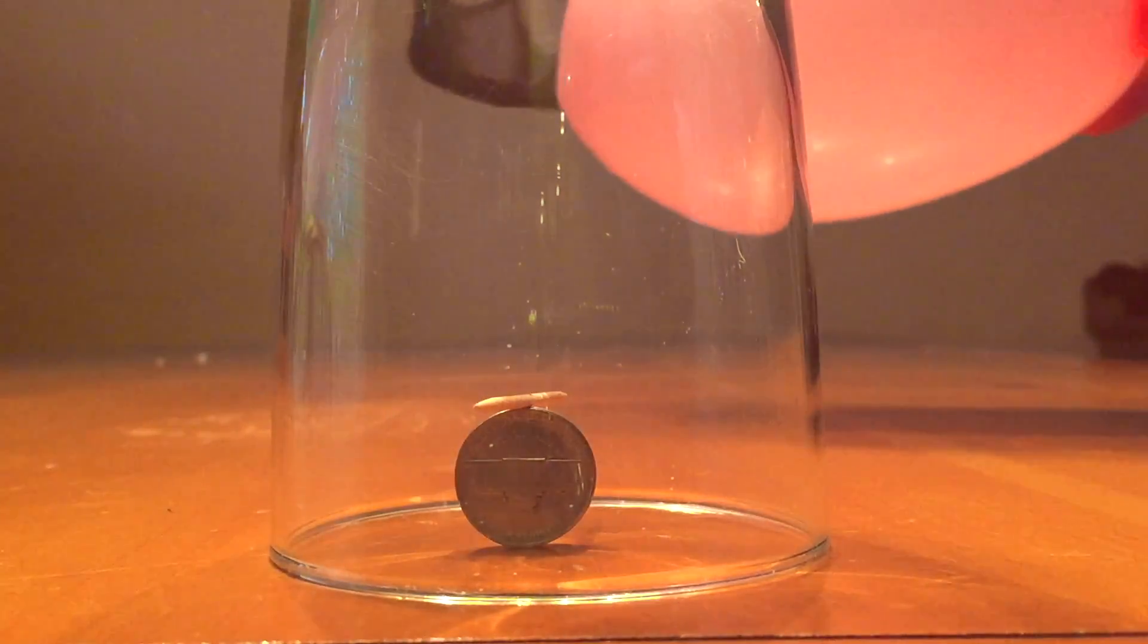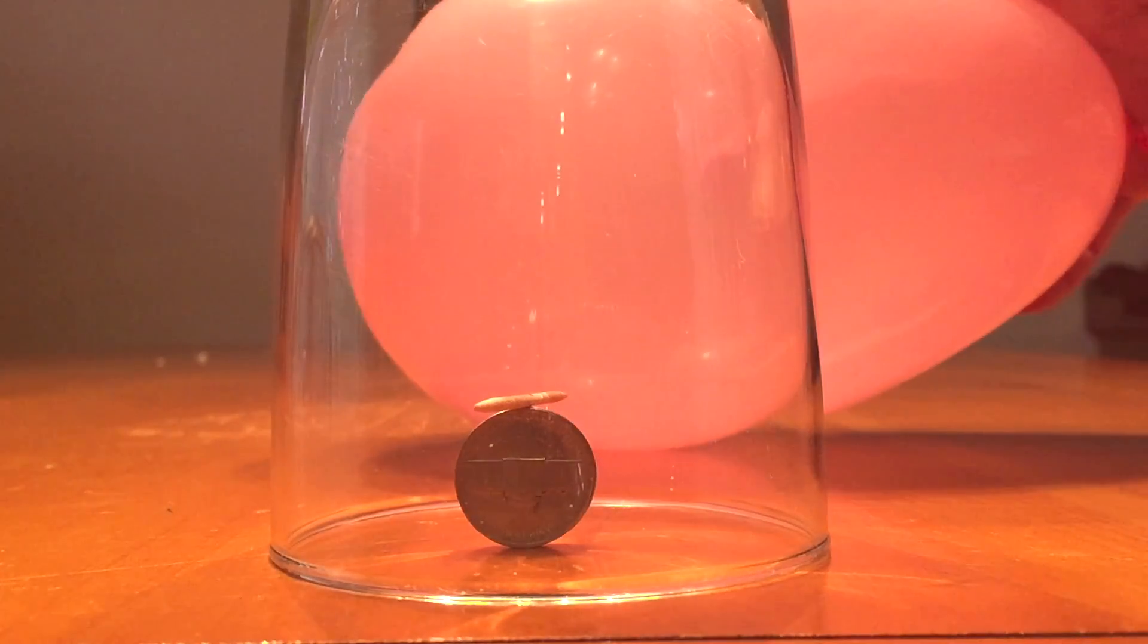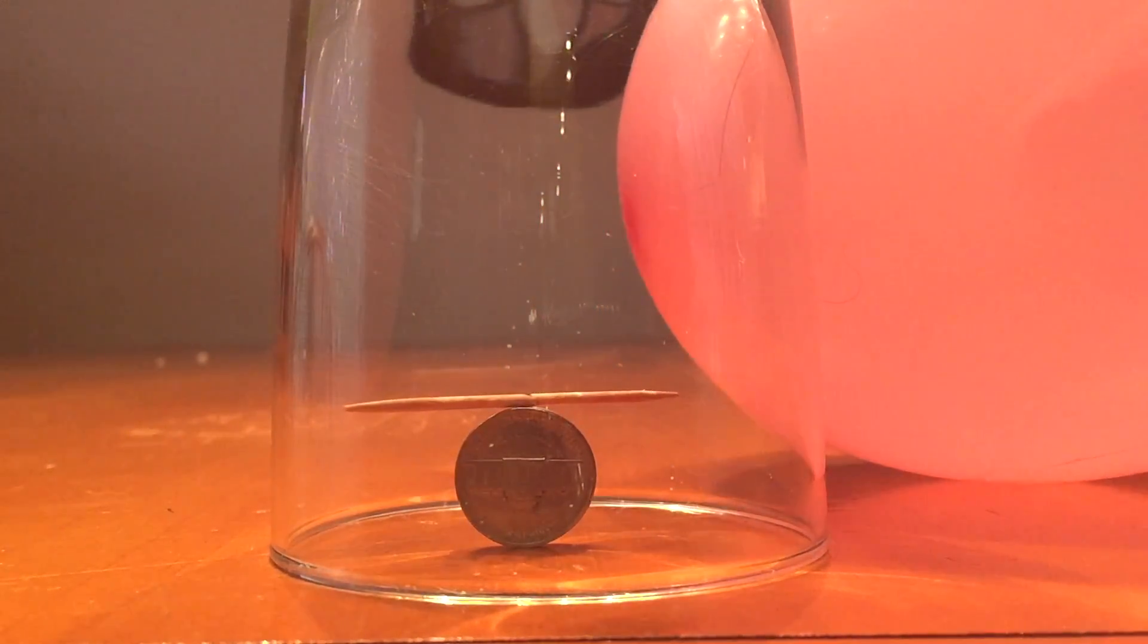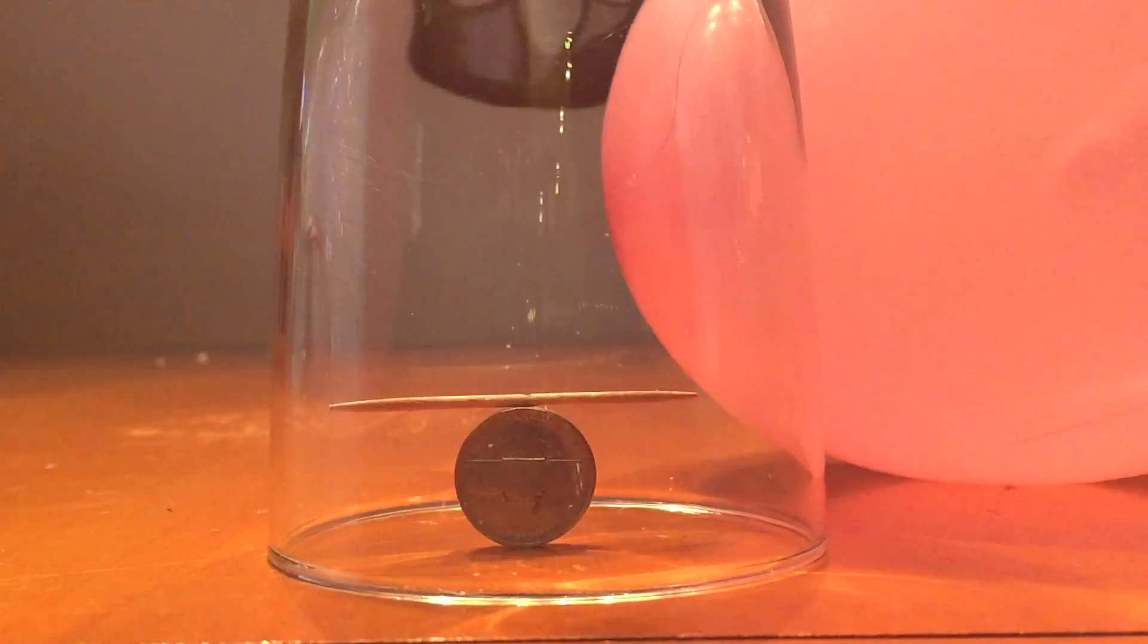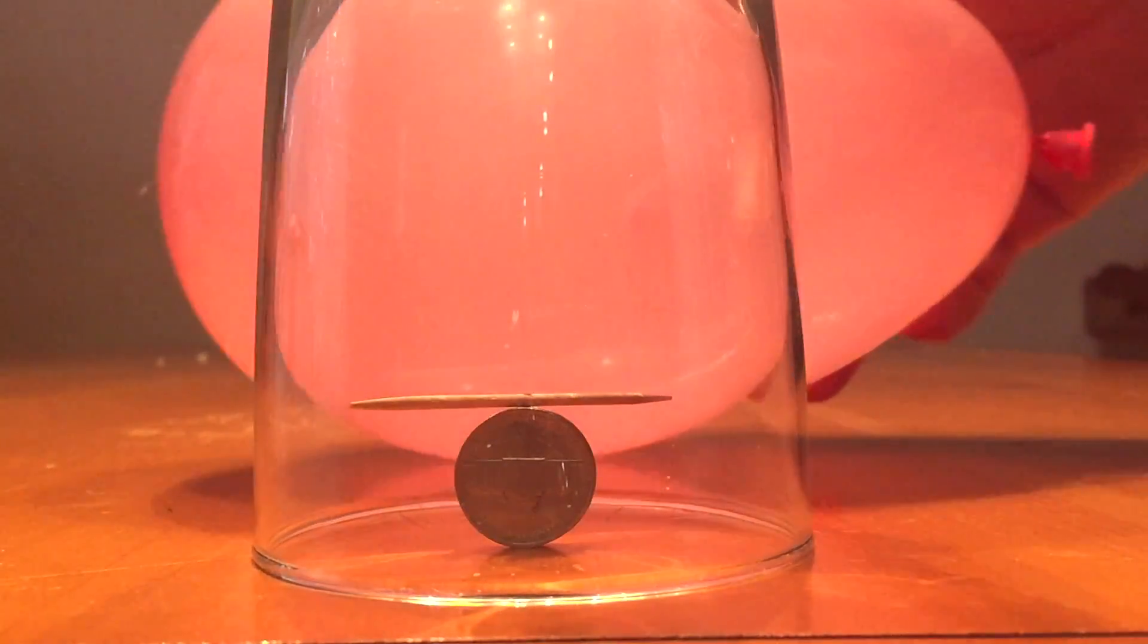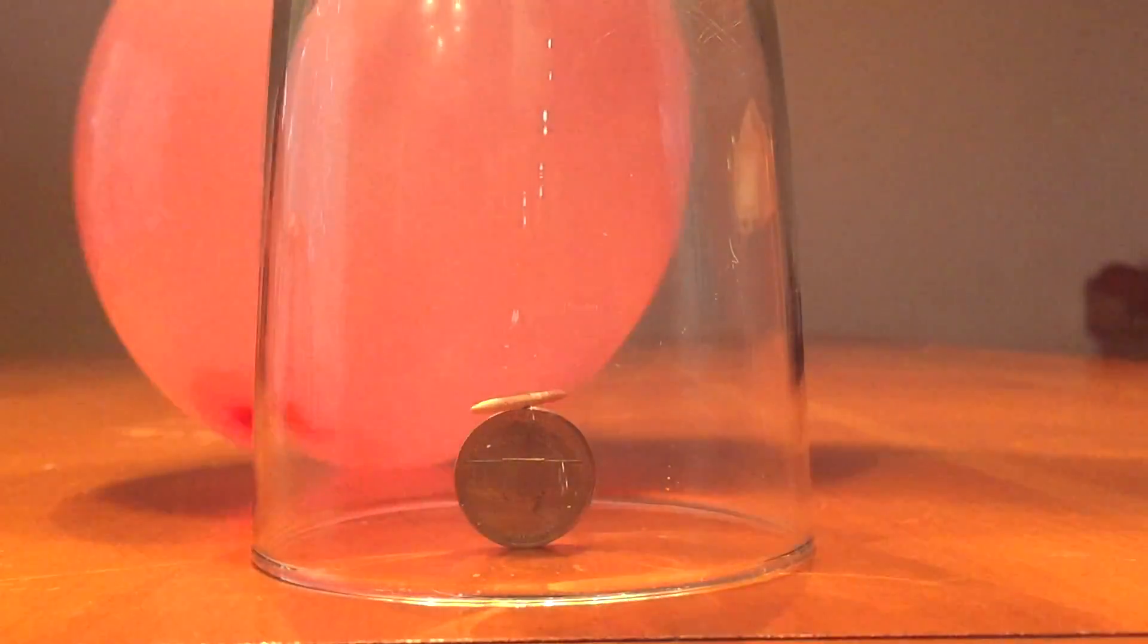When I bring the negatively charged balloon closer to the cup, the toothpick will move. The positively charged toothpick is attracted to the negatively charged balloon, which makes the toothpick rotate and swing around the coin as you move the balloon around.